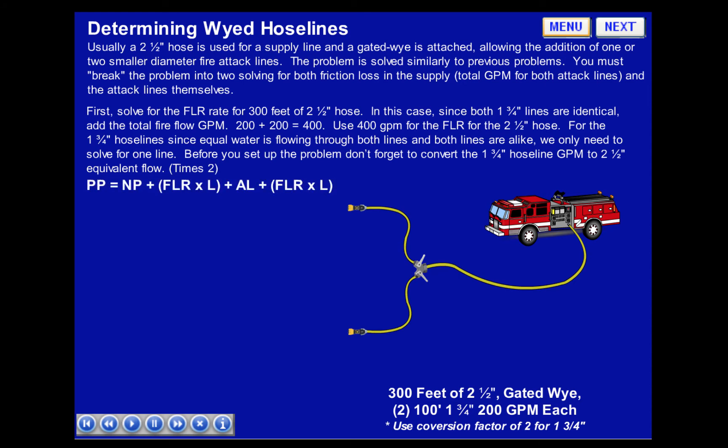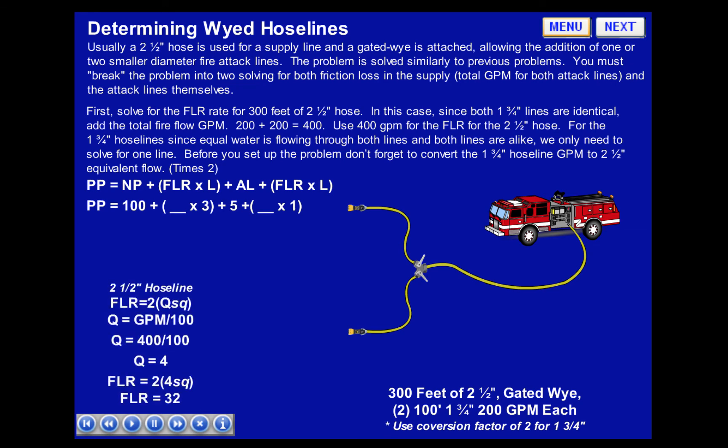We'll set this up as: pump pressure equals nozzle pressure, plus friction loss rate times length, plus appliance loss, plus friction loss rate times length. We'll start with the supply line, the 2.5-inch hose line.